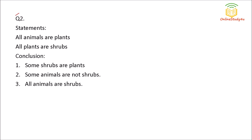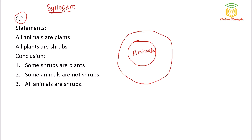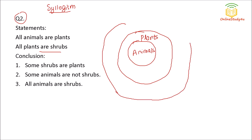Question number two is from syllogism. We have discussed all these types of questions in our free videos. Premise one: all animals are plants. Premise two: all plants are shrubs.